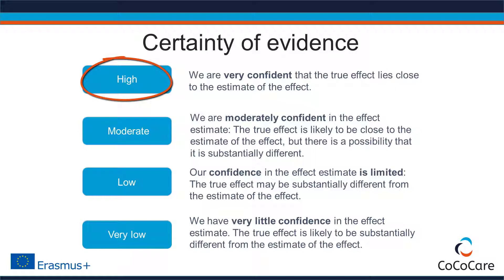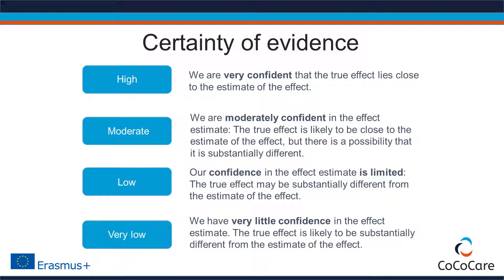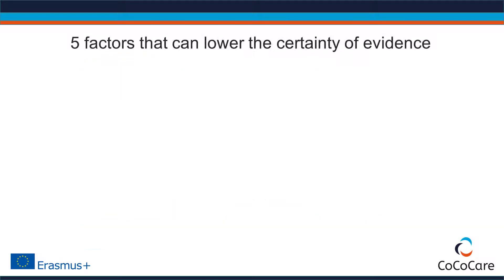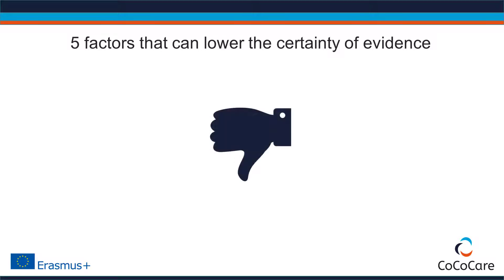High certainty means that we are very confident that the true effect lies close to the effect seen in the studies, and it is very unlikely that future studies will change the estimate of effect. At the other end of the spectrum is very low, which means that we have very little confidence in the effect estimate and future studies are very likely to substantially change this effect. How do we get these grades of certainty of evidence? First, we look at the factors that potentially lower our confidence in studies. GRADE defines five factors that can lower the confidence in the evidence.